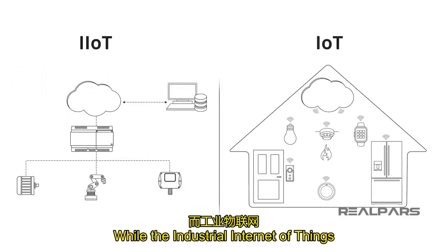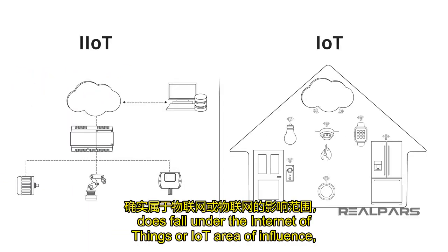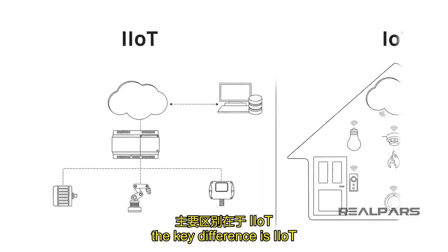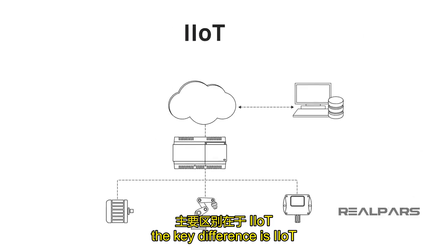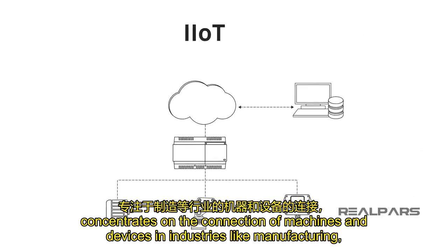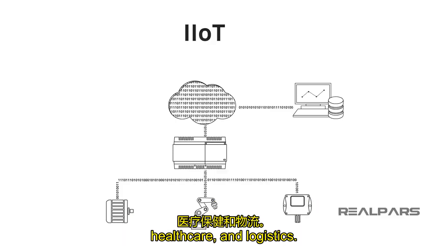While the Industrial Internet of Things does fall under the Internet of Things, or IoT, area of influence, the key difference is IIoT concentrates on the connections of machines and devices in industries like manufacturing, healthcare, and logistics.